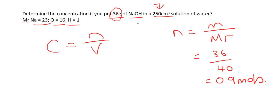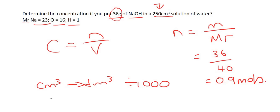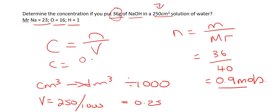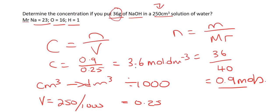Be careful — the volume is given in cm³, and they often do this. However, we need it in dm³. To convert from cm³ to dm³, you must divide by 1000. So the volume is 250 ÷ 1000 = 0.25. Our concentration is 0.9 ÷ 0.25 = 3.6. The units for concentration are mol·dm⁻³.